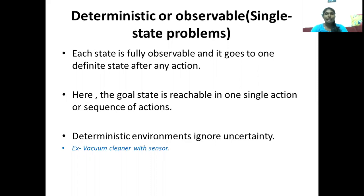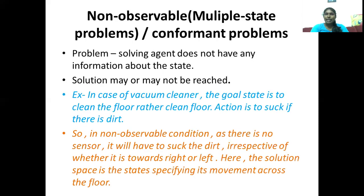We can start from a state and end in another state — we can directly know how to reach a goal state given the sequence of actions alone. This is the first type, where the environment is fully observable and the problem is defined properly. The second condition is non-observable, also called a multiple-state problem.